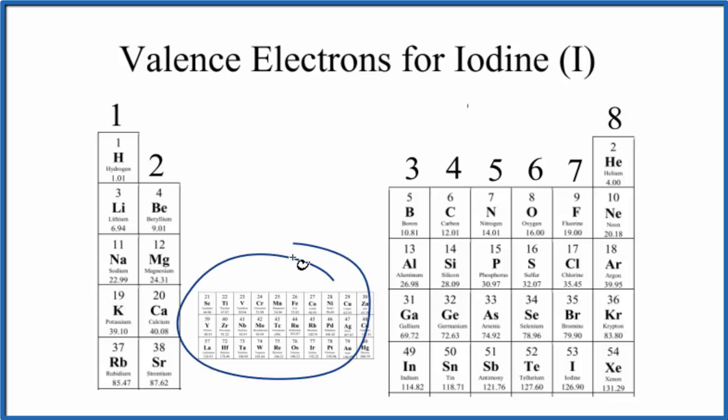We skip the transition metals, then group 13 through 18 has three through eight valence electrons. So we find iodine, that's down here. Iodine is in group 17, sometimes called 7a.